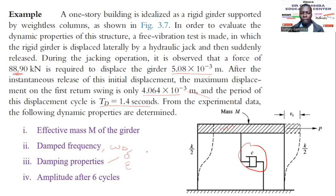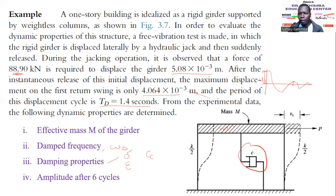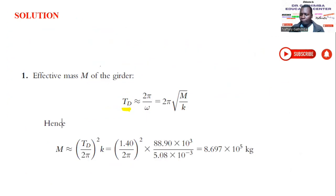We also need to find the amplitude after six cycles. As we know, with damping the amplitude decreases by the logarithmic decrement until the motion stops. The initial amplitude u₀ is 5.08 mm, and after one cycle u₁ is 4.064 mm, so we can calculate the logarithmic decrement from these. Let's solve this — it's always good to note what you have so that you know what you're supposed to calculate.